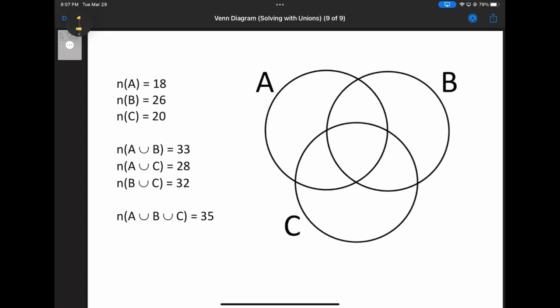In this example, we'll take a look at solving Venn diagrams when we have the unions of the individual pieces, not necessarily the intersections, which is usually a little bit easier.